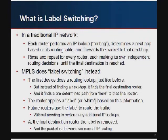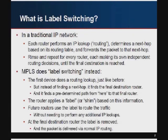What MPLS does is called label switching. The first device does a routing lookup just like before, but instead of just finding the next hop and forwarding, it identifies the final destination router — which everyone knows from looking at the routing table — and slaps a tag on the packet. The tag adds information and predefines a path to forward the packet through the network all the way to the final router. This tag is called a label or shim. Future routers see the tag and use it instead of doing an IP routing lookup, and at the final destination the label gets removed and the packet is handed off normally.